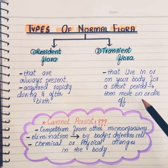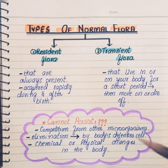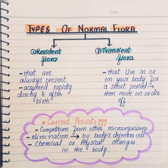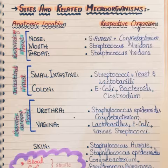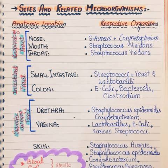Transient flora live on the body for only a short period of time — such as hours, days, or weeks — after which they move or die off. They cannot persist long due to: competition from other microorganisms, elimination by the body's defense cells, and chemical or physical changes in our body.